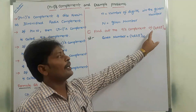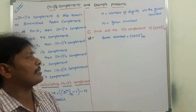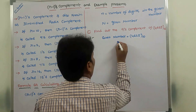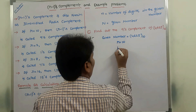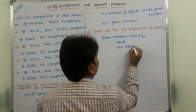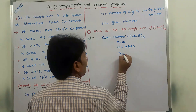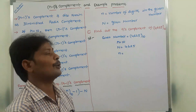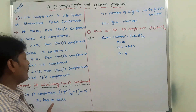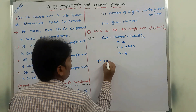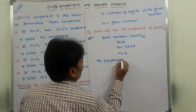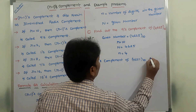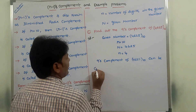By using that formula, how to find out the complement of a given number can be explained with one example. Find out the 9's complement of 4,625 base 10. The given number is 4,625 base 10. The radix R is 10. Capital N is 4,625. Small n is the number of digits — 1, 2, 3, 4 — so there are 4 digits. Now we have to find out the complement.